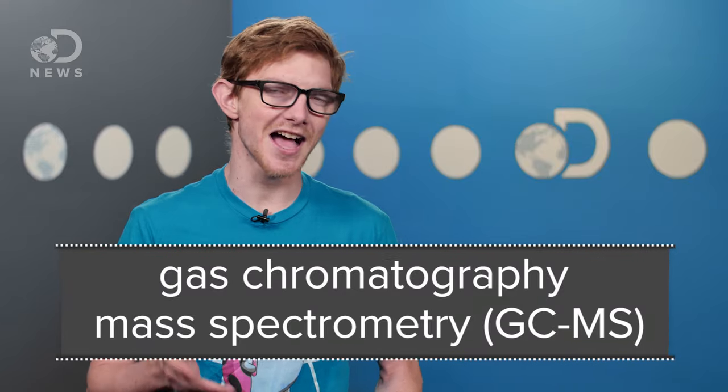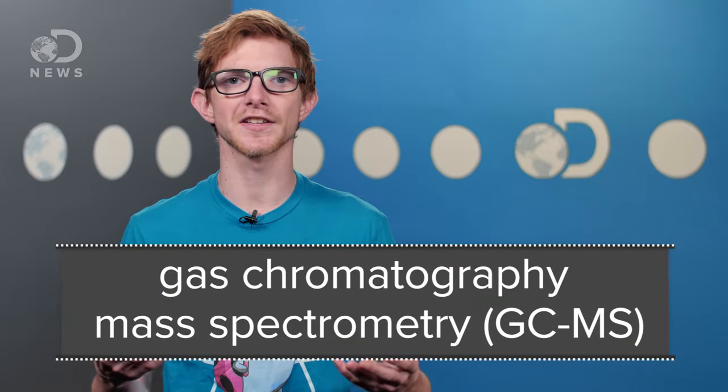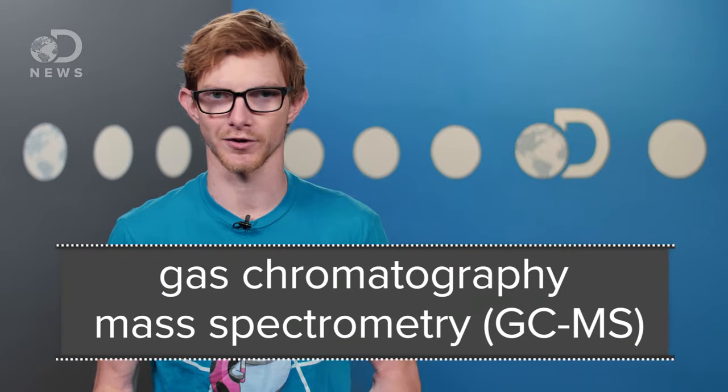A gas chromatography slash mass spectrometry test analyzes another urine sample, usually taken from the original. The sample is pushed through a tubular column by helium gas, and certain drugs pass through it at certain known speeds. Once it gets to the end of the column, it's fragmented with ionization and the fragments are sorted by mass.